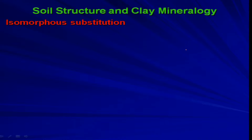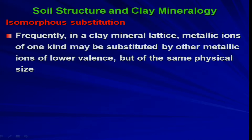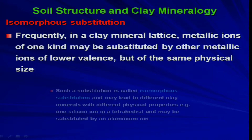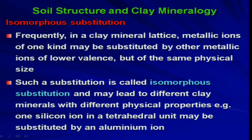Isomorphous substitution: frequently in a clay mineral lattice, metallic ions of one kind may be substituted by other metallic ions of lower valence but of the same physical size. Such a substitution is called isomorphous substitution and may lead to different clay minerals with different physical properties. For example, one silicon ion in a tetrahedral unit may be substituted by an aluminum ion, and because of this the main sheet remains the same but different properties result.